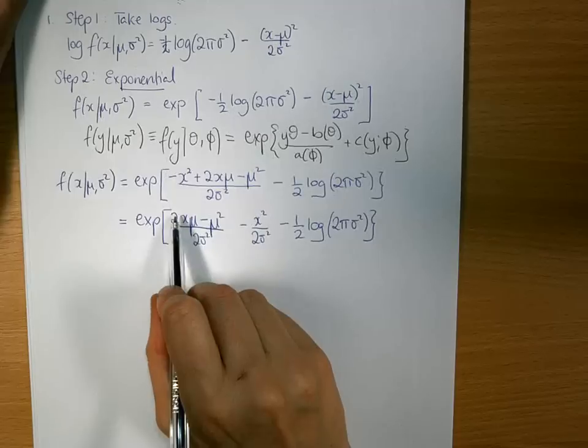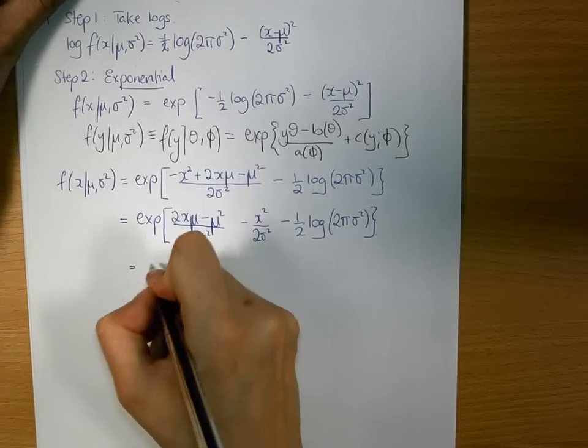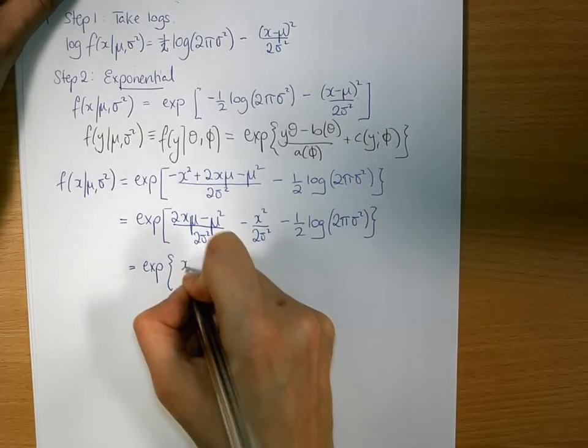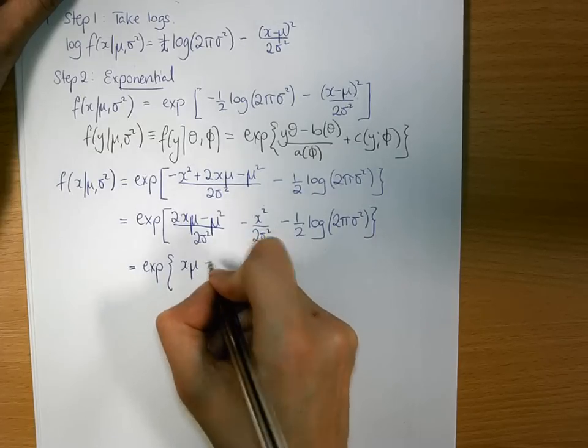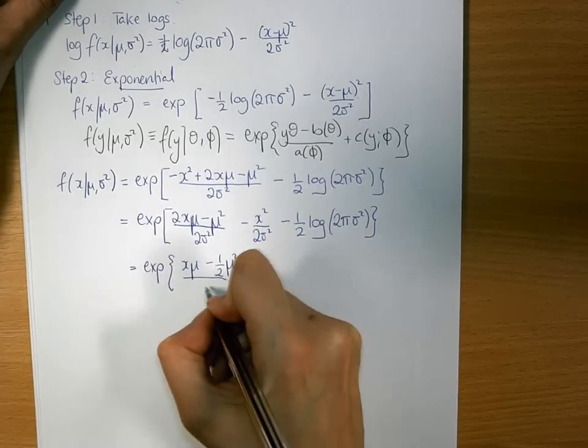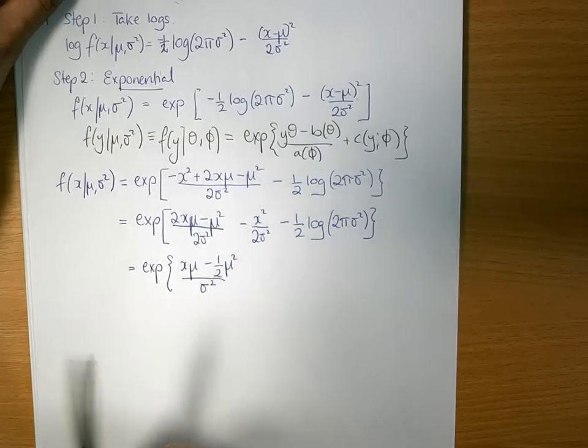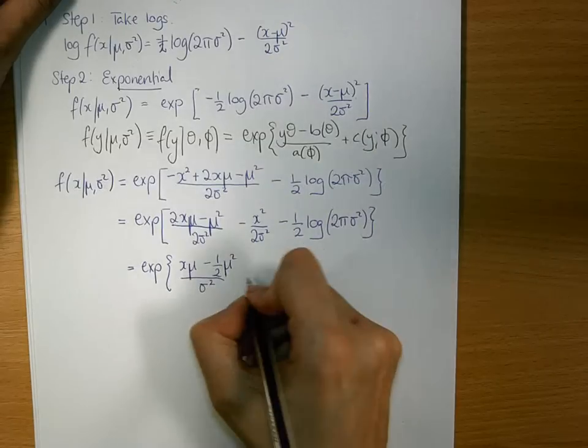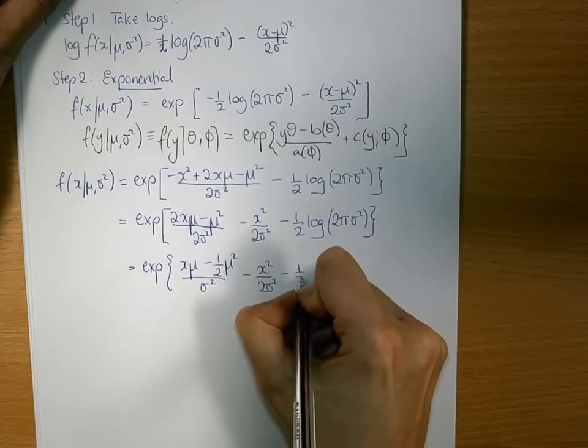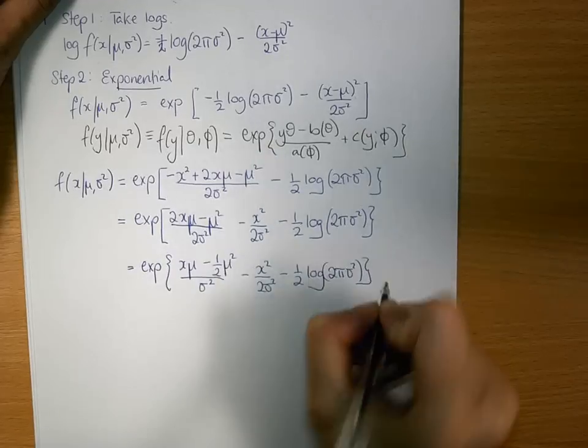We're one step closer. We'll divide across so we have it just in terms of x. So we have exponential of x mu minus a half mu squared all over sigma squared. I've just divided above and below by 2 minus x squared over 2 sigma squared minus a half log 2 pi sigma squared.